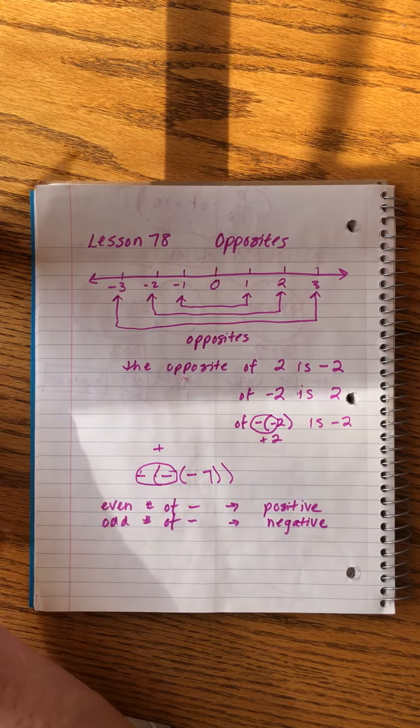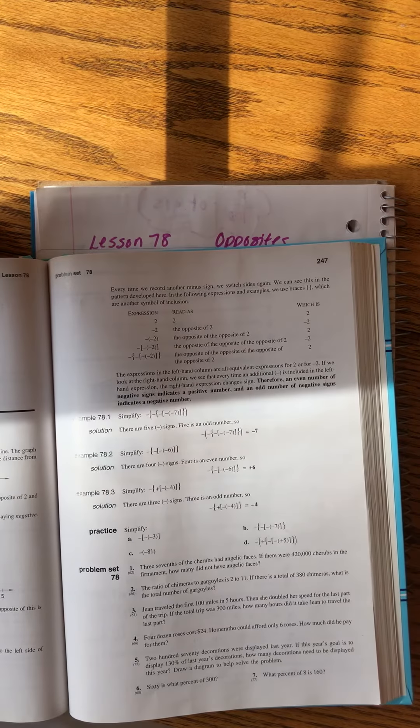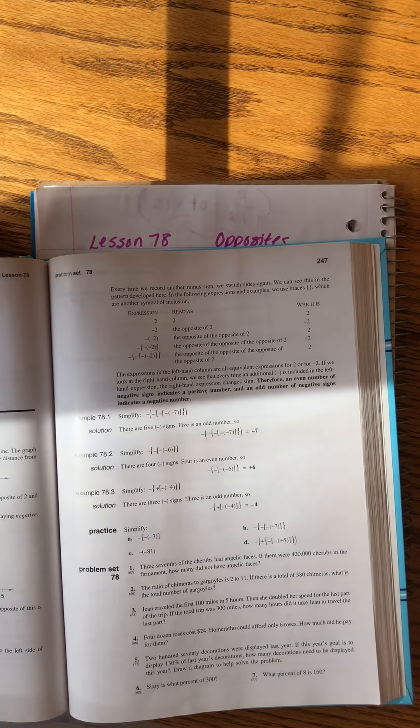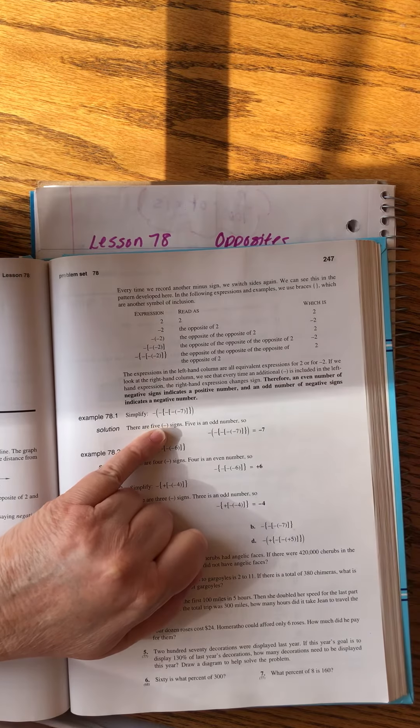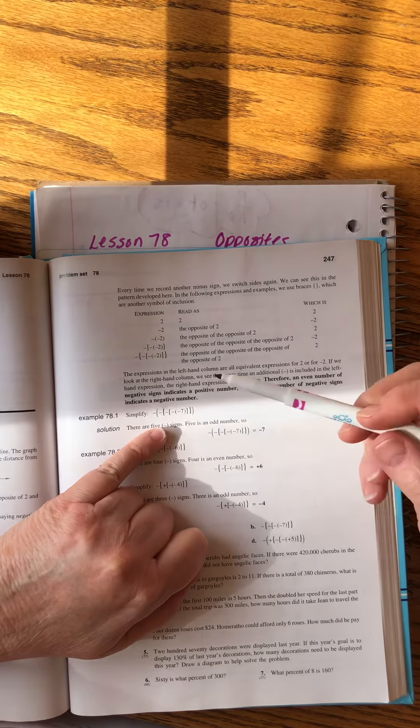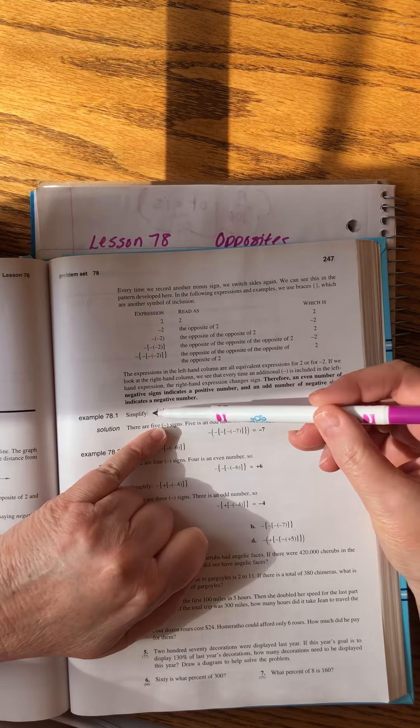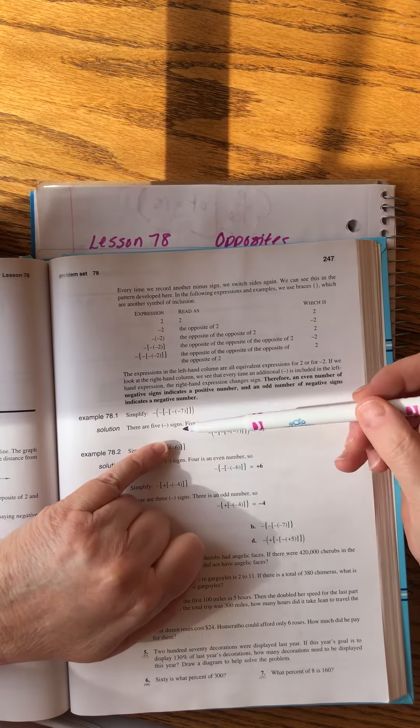Okay, so let's look at these problems in the book. Sorry I said all that stuff about the number line and the opposite. I think it's needlessly confusing. Let's look at example 78.1. Look at all those minus signs and all the weird brackets. Take a minute just to go, oh, that's really ugly. But it doesn't make this hard. All we have to do is count the minus signs. One, two, three, four, five. There are five minus signs. It's negative seven.